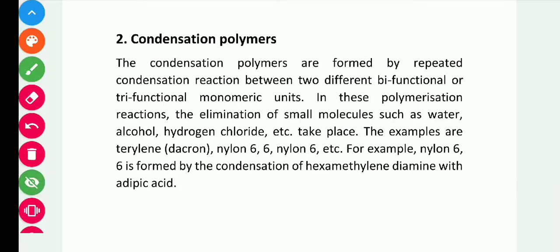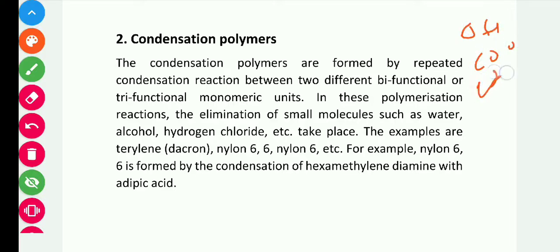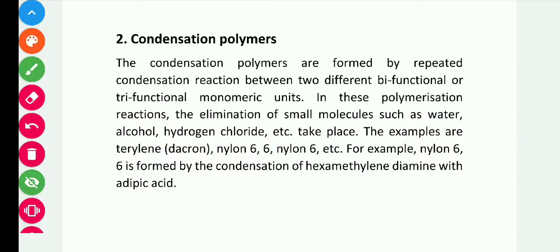Condensation polymers are formed by repeated condensation reactions between two different bifunctional or trifunctional monomer units, with the elimination of small molecules such as water, alcohol, hydrogen chloride, or ammonia. Bifunctional means two functional groups are present, such as -OH or -COOH. Trifunctional means three functional groups are present. The small molecules eliminated are side products of the reaction.